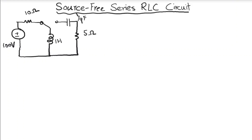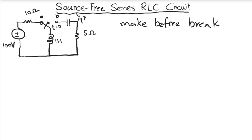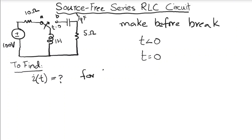Today we are going to solve a circuit problem related to a source-free RLC circuit. Here are terminals A and B. When t is less than zero, the switch is closed to terminal A. When t equals zero, the switch disconnects from terminal A and connects to terminal B. This is called 'make before break,' meaning the switch completes a new circuit before breaking the old one.